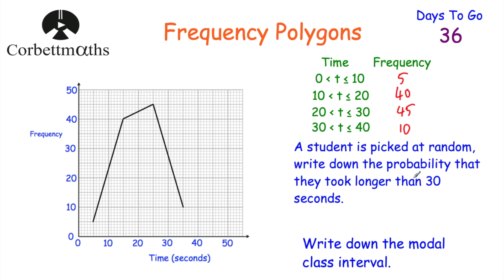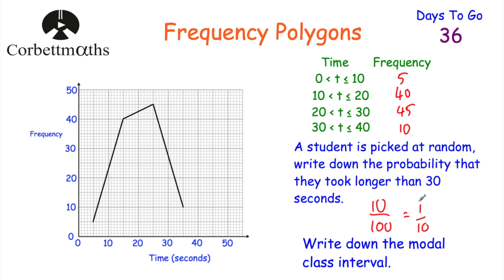We've been asked to find the probability that a student takes longer than 30 seconds. That's going to be the last category — these 10 students all take longer than 30 seconds, whereas all the rest take 30 seconds or less. Let's see how many students there are altogether: 5 plus 40 is 45, plus another 45 is 90, plus 10 is 100. So there are 100 students altogether, and 10 of them take longer than 30 seconds. So it's 10 out of 100, which cancels down to 1 tenth.